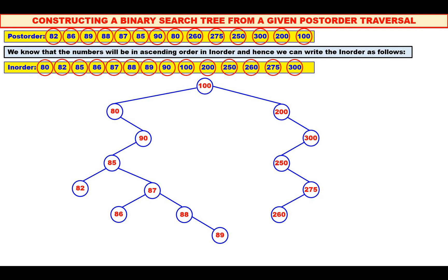Now the tree is completely constructed. In the third example, only post-order was given. From the post-order we could get the inorder, because we know in inorder all the elements are in ascending order. And hence, we got the inorder, and using that we got the binary tree also.